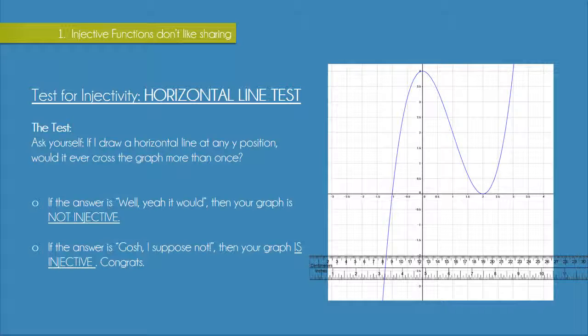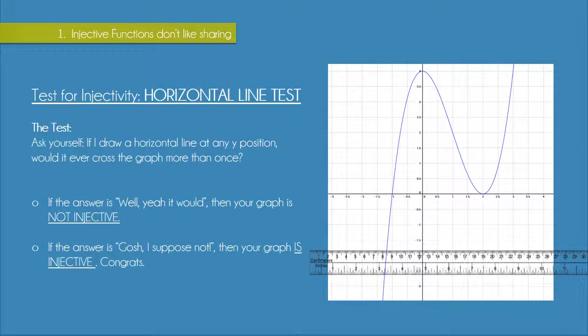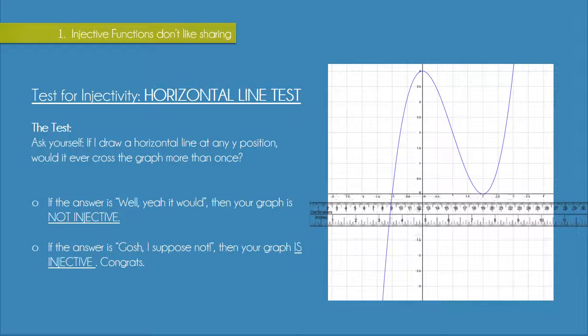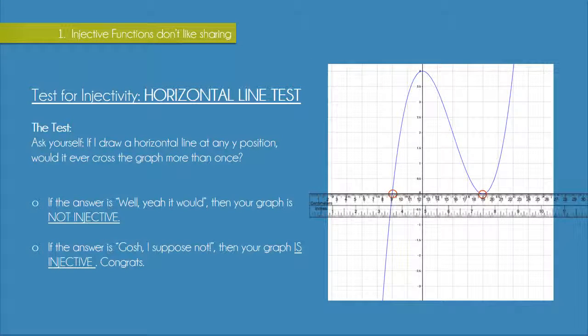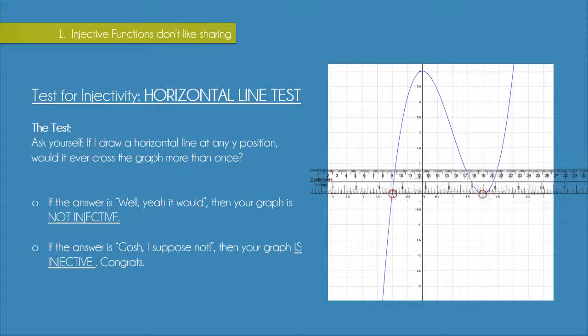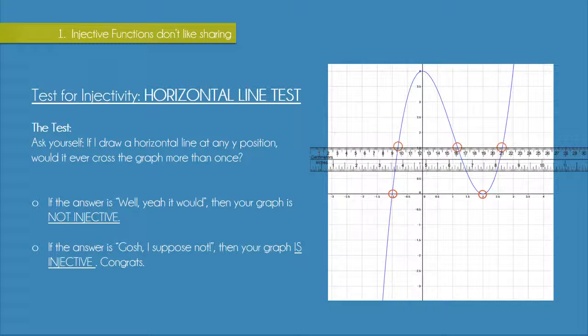On this cubic function on the right, we see that initially the ruler only touches the graph once. Suddenly, though, it touches the graph in two places at once. And if we keep moving it upwards, it will touch the graph in three places at once. This means that this cubic function is not injective. In some places, we have three input values associated with the one output. On the x axis here, we have two input values associated with the same output of y equals zero. So we cannot say that this function is injective.